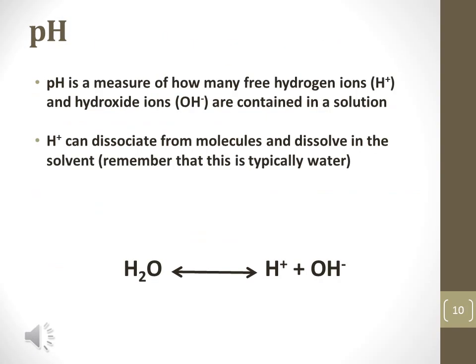Acidity is measured by the pH scale. The pH scale is a measurement of the concentration of free hydrogen ions, also called hydronium ions, dissolved in a solution. The number of hydrogen ions is always inversely proportional to the number of hydroxide ions, which are negatively charged molecules comprised of an oxygen atom and a hydrogen atom. The lower the pH is, the higher the hydrogen ion concentration is in a solution. The higher the pH is, the lower the hydrogen ion concentration is in a solution.